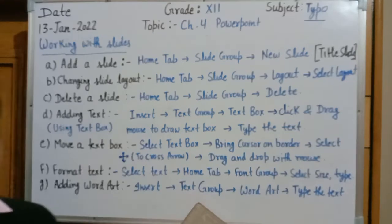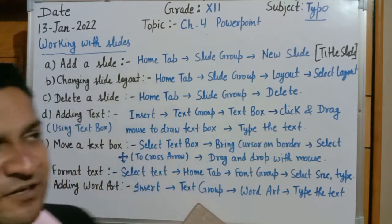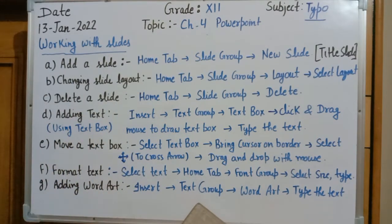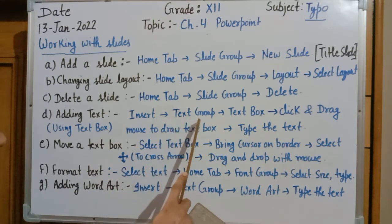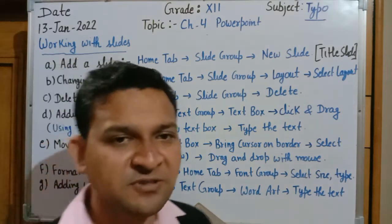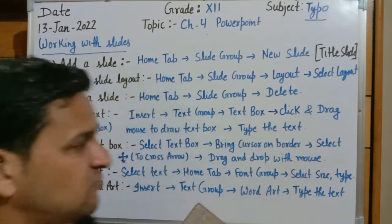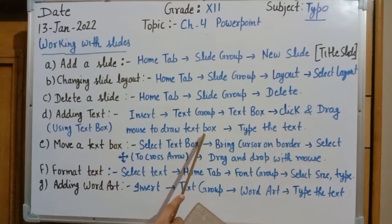To add text — meaning additional text in your document — we use a text box. To insert a text box: click on Insert, then click on Text group, and select the Text Box option. After selecting it, click and drag the mouse to draw the text box. A text box will appear on your screen and you can type text inside it.